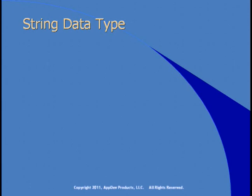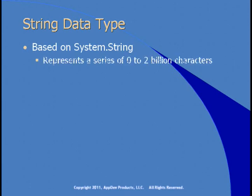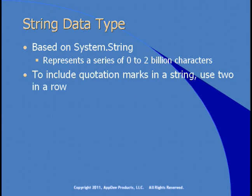The Char data type holds a single character. The String data type, based on System.String, holds a series of characters — anywhere from zero to two billion characters. If you want to include quotation marks in a string, use two of them in a row. For example, declaring a variable called greeting as String with the value 'hello "Robert"' uses two quotation marks before and after Robert to embed them in the string, with the outer quotes marking where the string starts and stops.